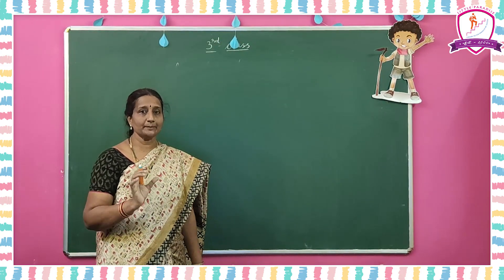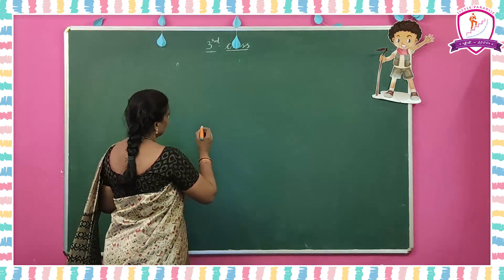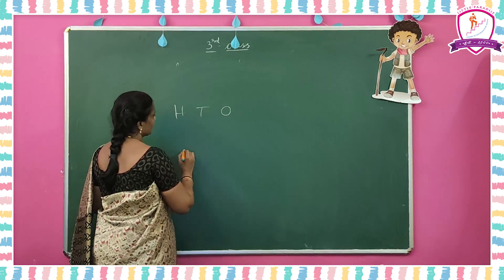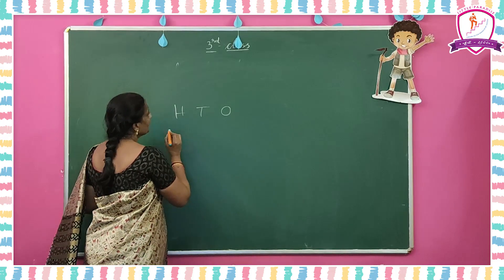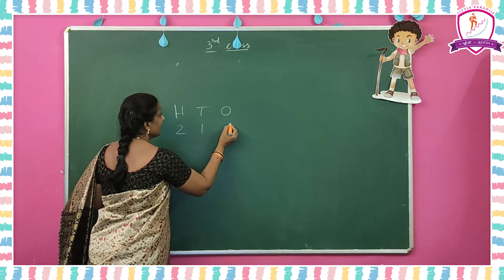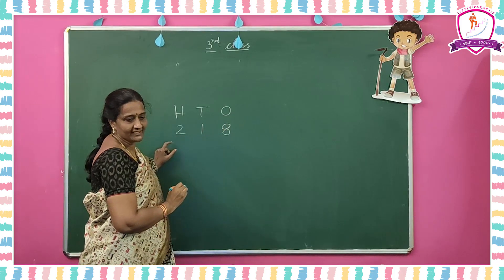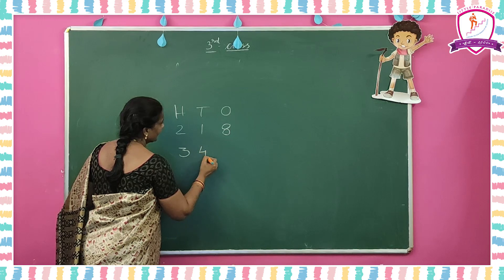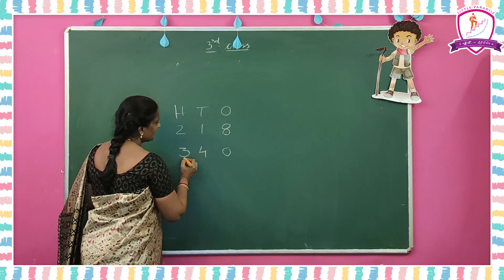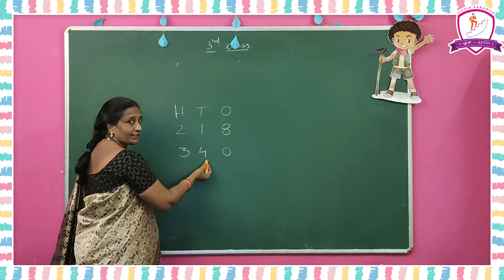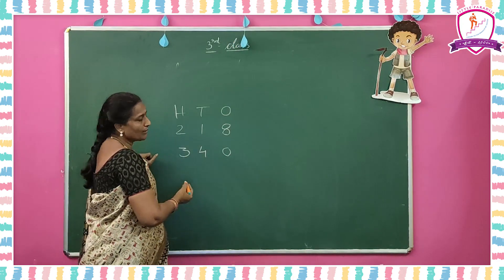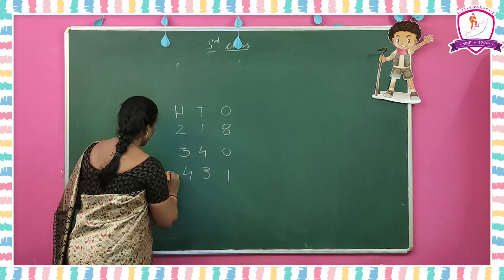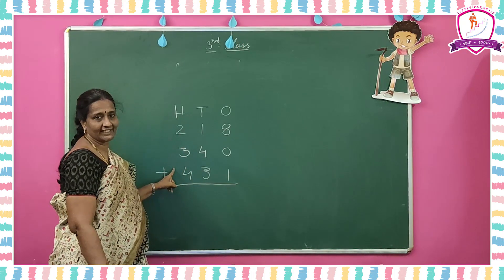Now how can we add three numbers — three 3-digit numbers? Take hundreds place, tens place, and ones place. Two hundred and eighteen means 2 hundreds, 1 ten, and 8 ones. Next number is three hundred and forty — 3 hundreds, 4 tens, zero ones. And four hundred and thirty-one — 4 hundreds, 3 tens, 1 one. Now add all these three numbers.